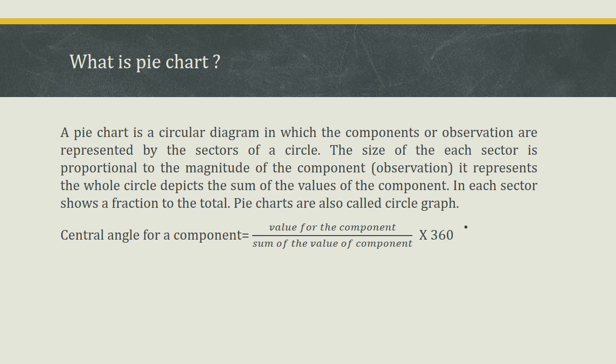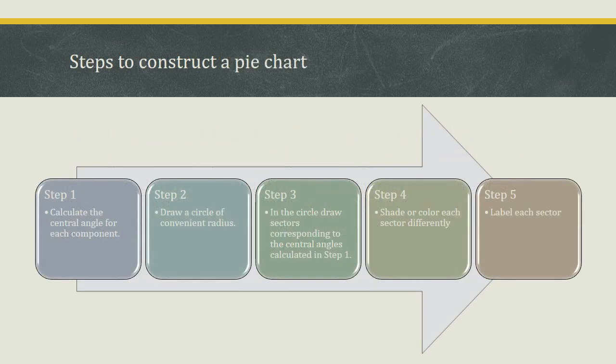The formula for calculating the central angle for a component equals: value of the component upon sum of the values of all components, multiplied by 360 degrees. Steps to construct a pie chart: first, calculate the central angle for each component; second, draw a circle of convenient radius; third, draw sectors corresponding to the central angles; fourth, shade or color each sector differently; fifth, label each sector.